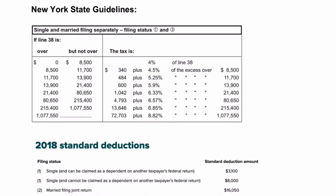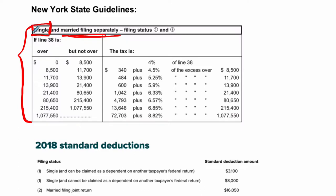In this video we're going to do a really basic introduction into calculating your New York State tax. This table is one of many tables that you can use, and this table pertains to single and married filing separately. We're going to assume that we're filing as single for this investigation, and we'll look at a couple of gross incomes here.